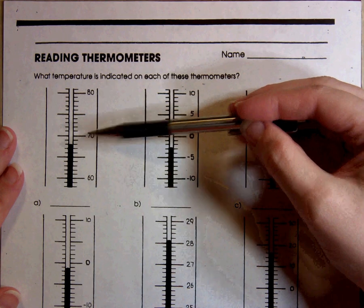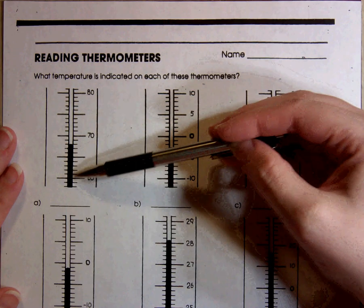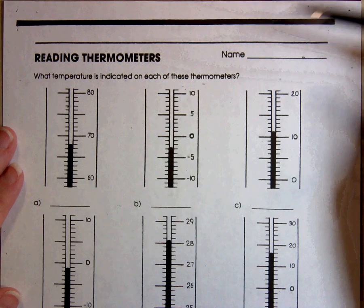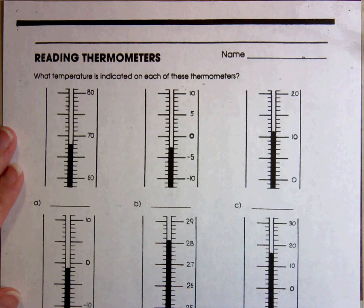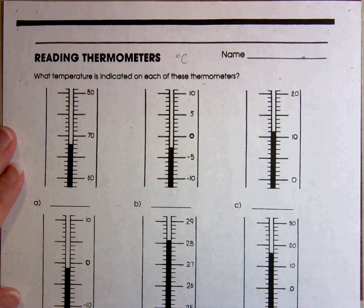Going from 60 to 70, there are 10 marks. It's like reading a ruler or a graduated cylinder. Each one of these marks has to be worth one, and you're going to put your answer in degrees Celsius. So all of your answers should end in degrees Celsius for your unit.